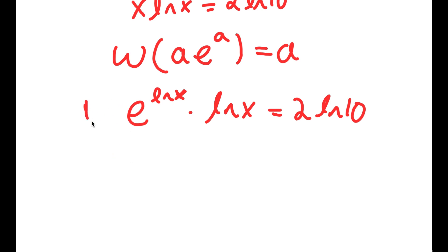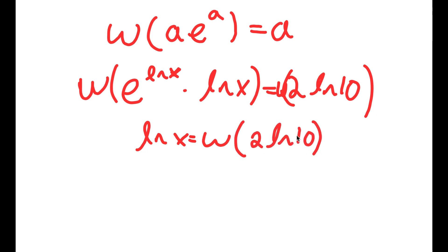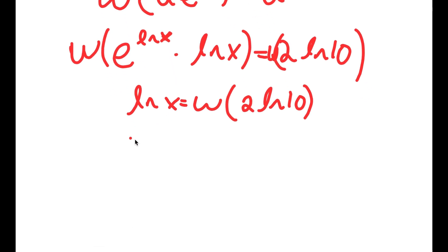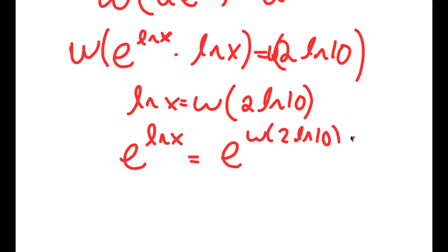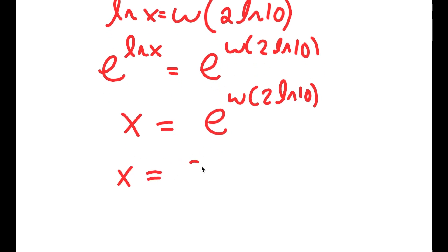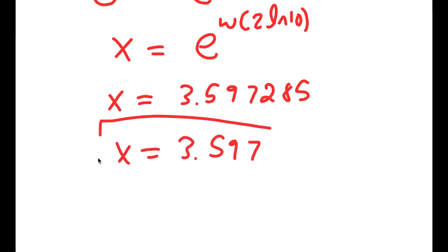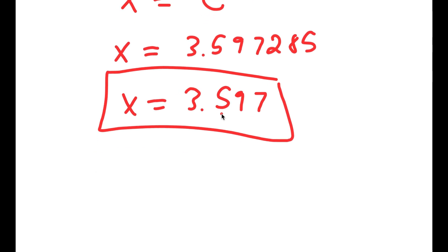So now if I take the Lambert W function on both sides, this results in ln x equaling W of 2 times ln 10. And now if I take e to the power of both sides, e to the power of ln x equals x, so I get x is equal to e to the power of W of 2 times ln 10. And this is equal to 3.597285, which rounds to 3.597. So this is my answer.